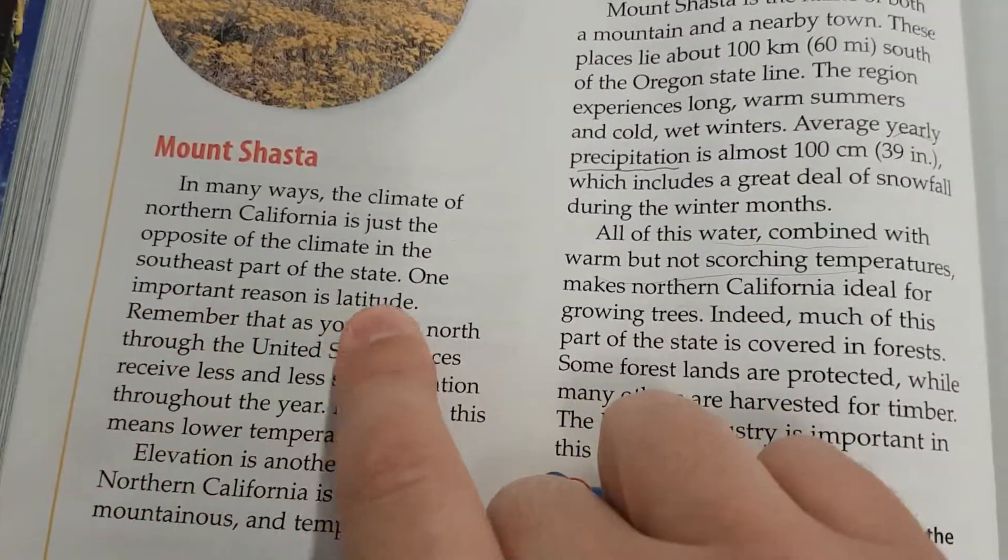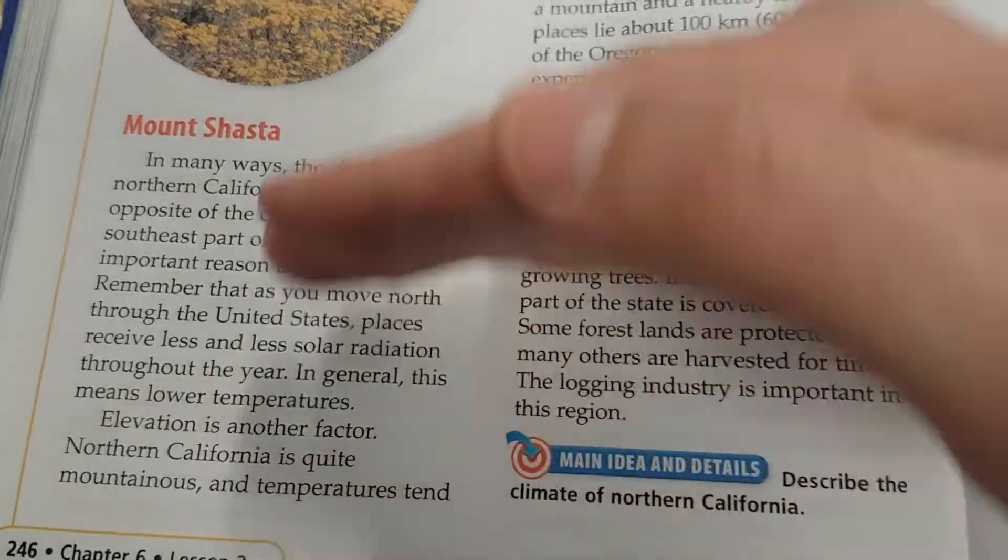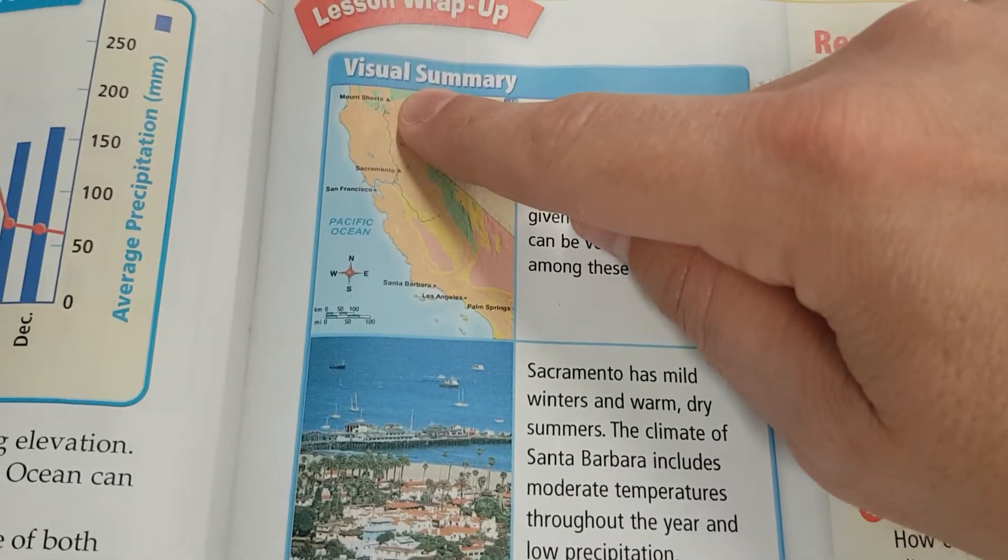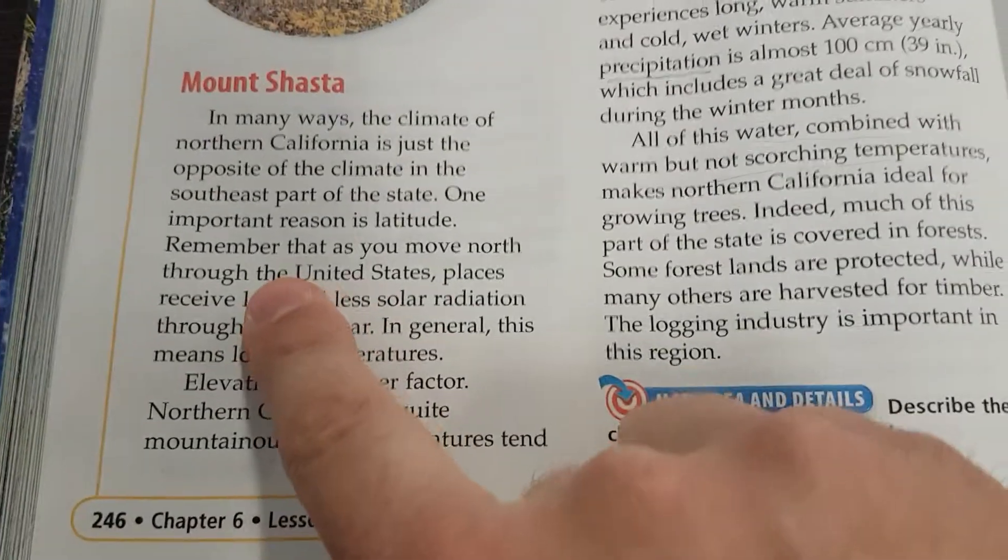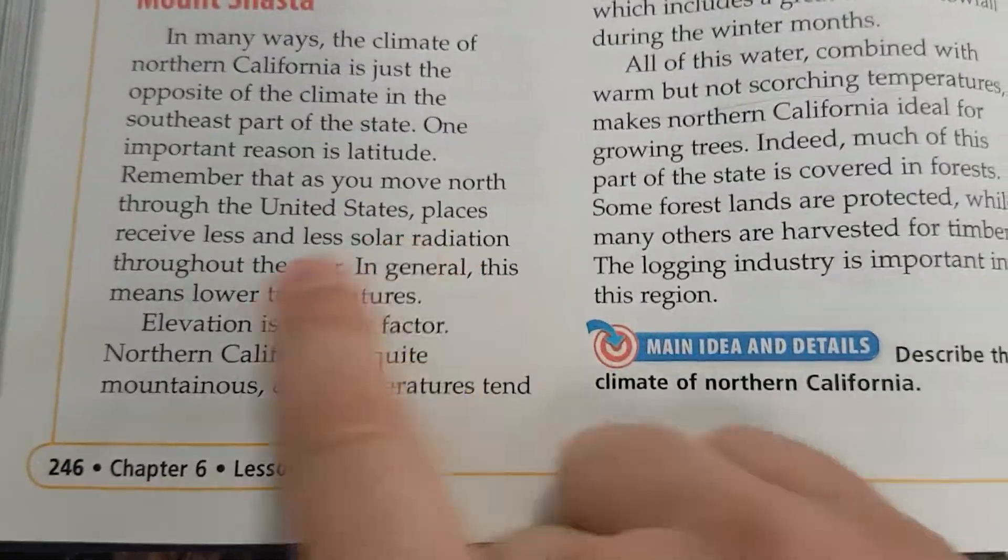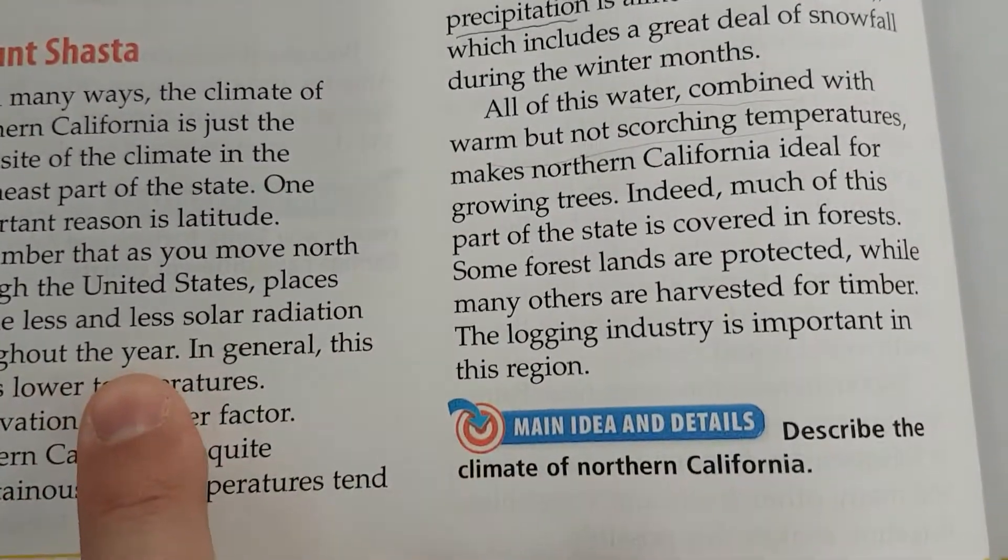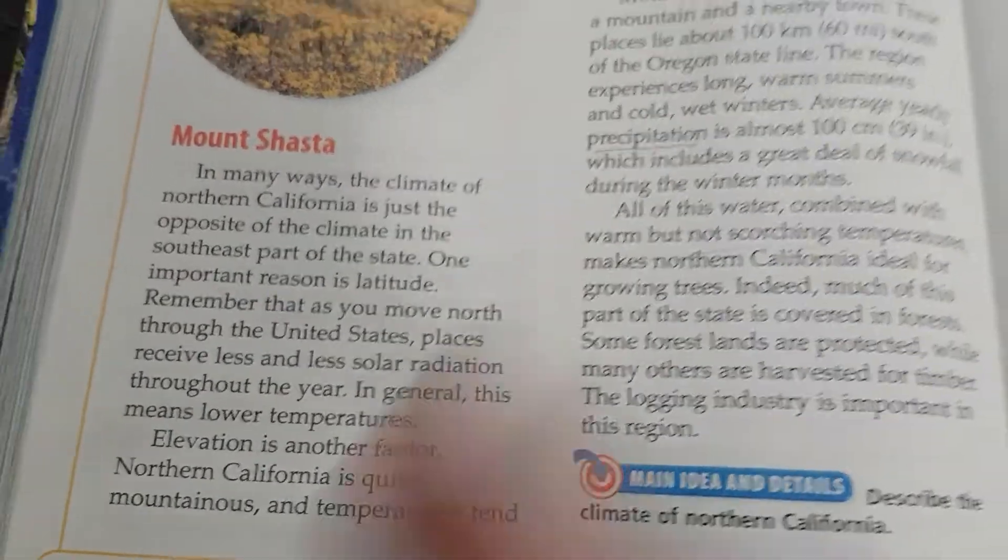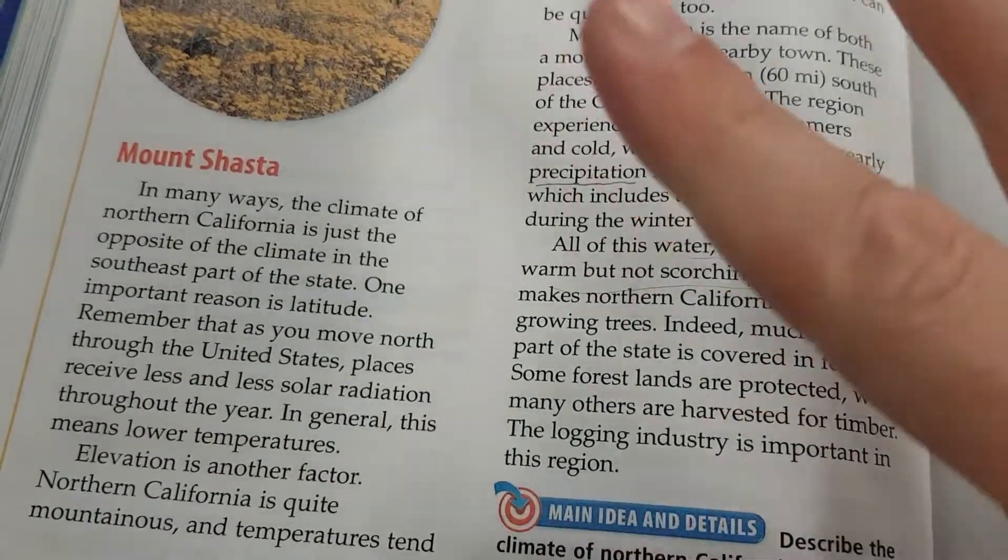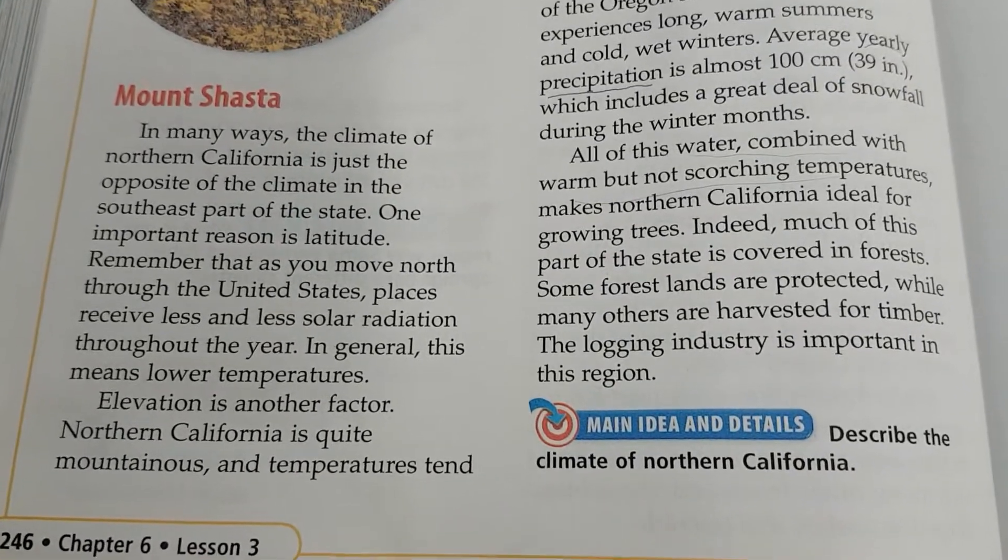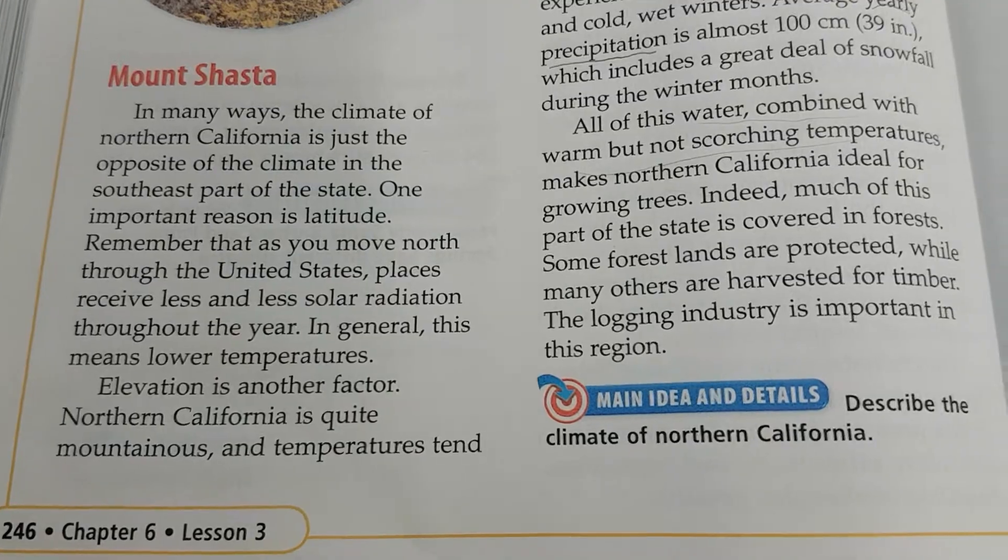One important reason is latitude. Remember latitude is how far north or south you are. So Los Angeles has a very low latitude, but Mount Shasta has a much higher latitude. Remember that as you move north through the United States, there's the little compass moving north, places receive less and less solar radiation throughout the year. In general, this means lower temperatures. So going all the way back to two or three lessons ago about how the earth curves away, how the energy spreads out, and how that means that it ends up getting less solar radiation, less energy, so it ends up being darker and cooler when you get towards the poles.